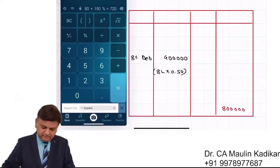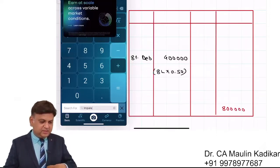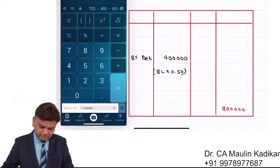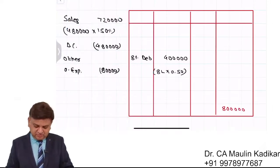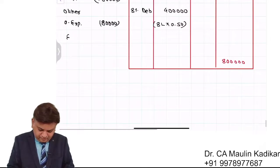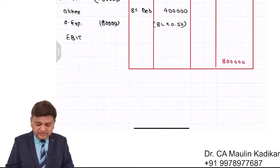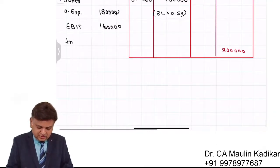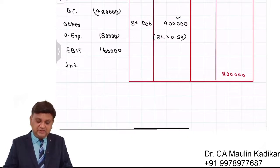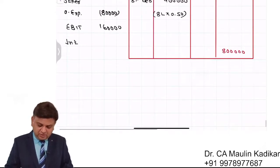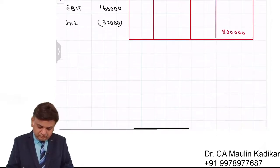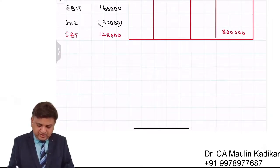Sales is Rs 7,20,000; direct cost is Rs 4 lakhs 80,000 and other expenses are Rs 80,000. So EBIT — I am sorry — operating income is Rs 1 lakh 60,000. Rs 4 lakhs is the debt financing at 8% rate of interest, so interest is Rs 32,000. Earning before taxes comes to Rs 1 lakh 28,000.